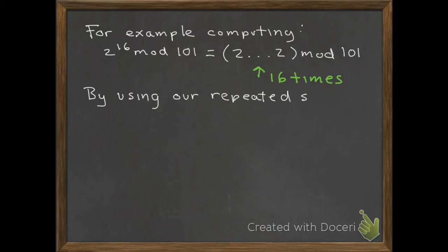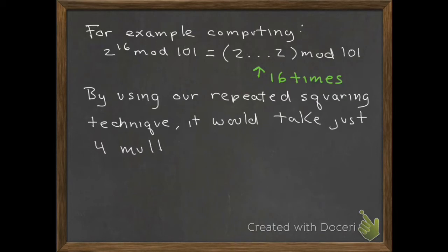By using the repeated squaring technique, we can reduce the number of multiplications we need to make. In this case, it would just take 4 multiplications. As the numbers get larger, the savings would be even greater.